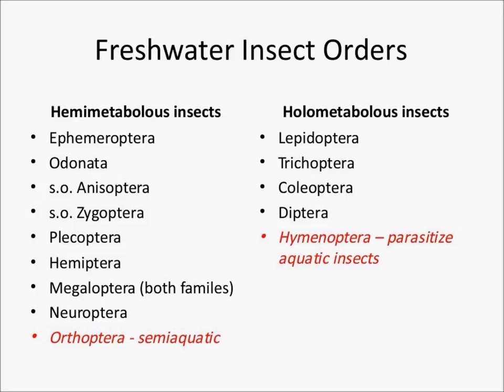Among the holometabolous insects are the Lepidoptera — the same order as terrestrial butterflies and moths — the Trichoptera or caddisflies, which are closely related to the Lepidoptera, the Coleoptera or beetles, and the Diptera, also known as the two-winged flies. There are also some Hymenoptera that parasitize aquatic insects, but we will not cover those since collecting them is very rare.